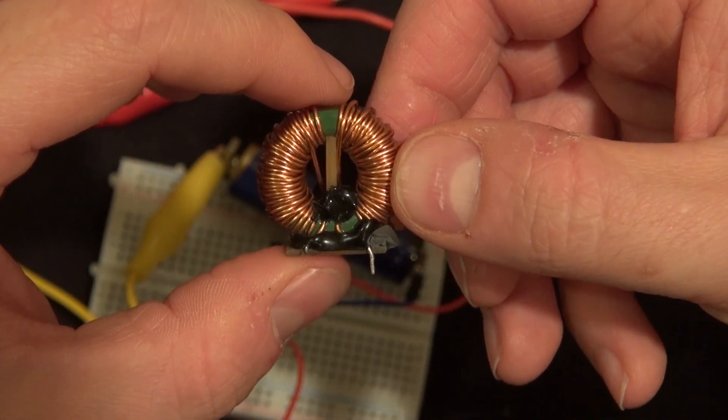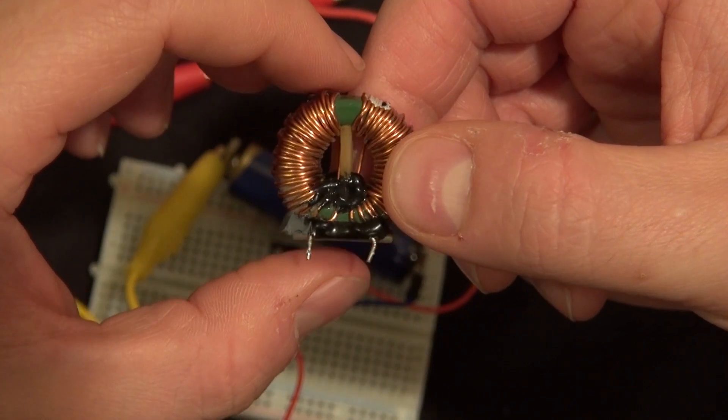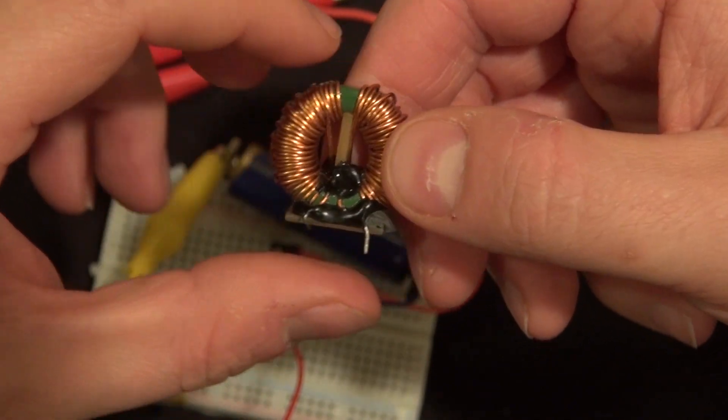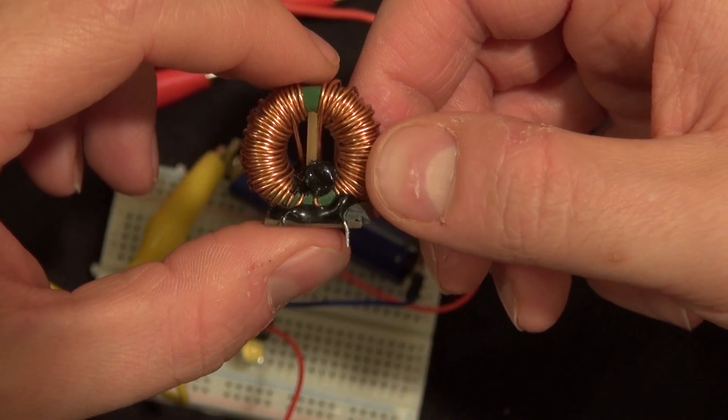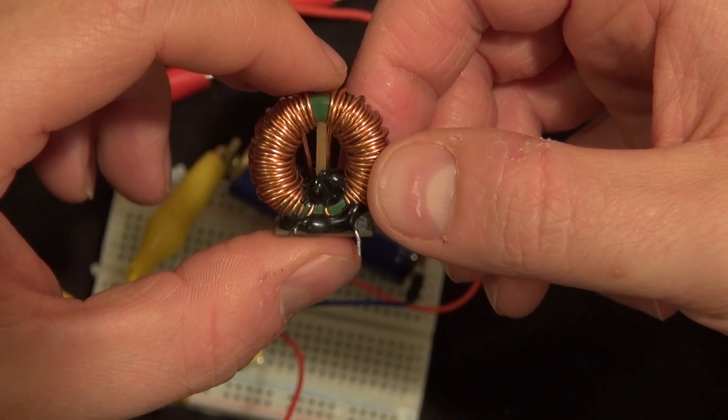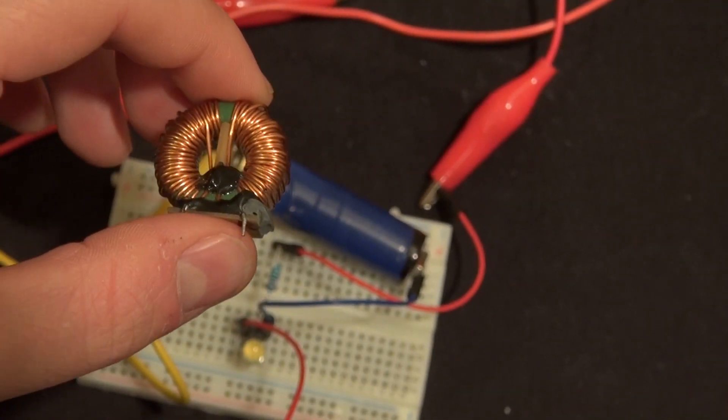So there you have it. You can actually use a toroid core inductor and use it as a joule thief. This can be very useful for future projects, or maybe artistic projects. Not really sure, but you can do some interesting things with this.